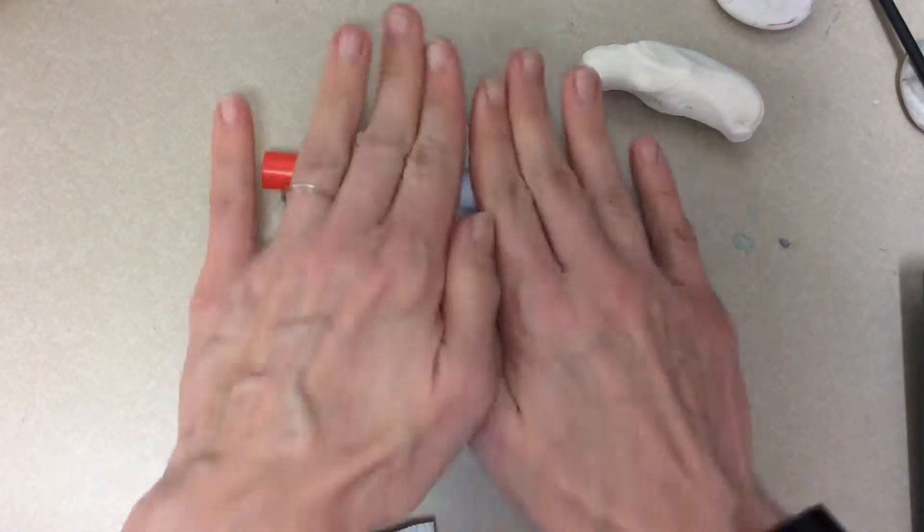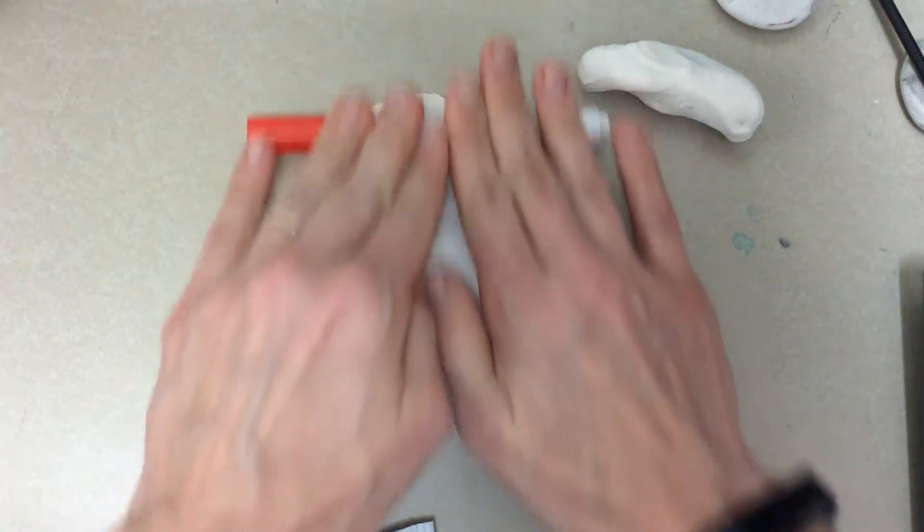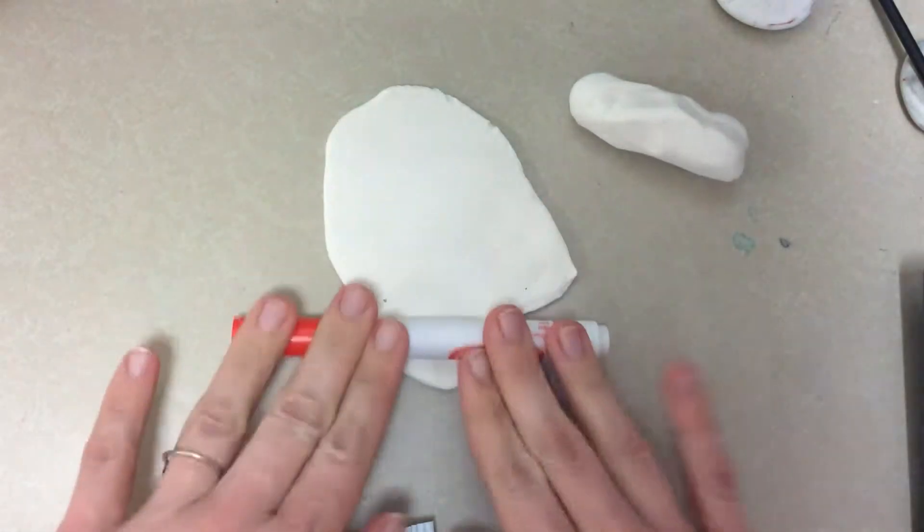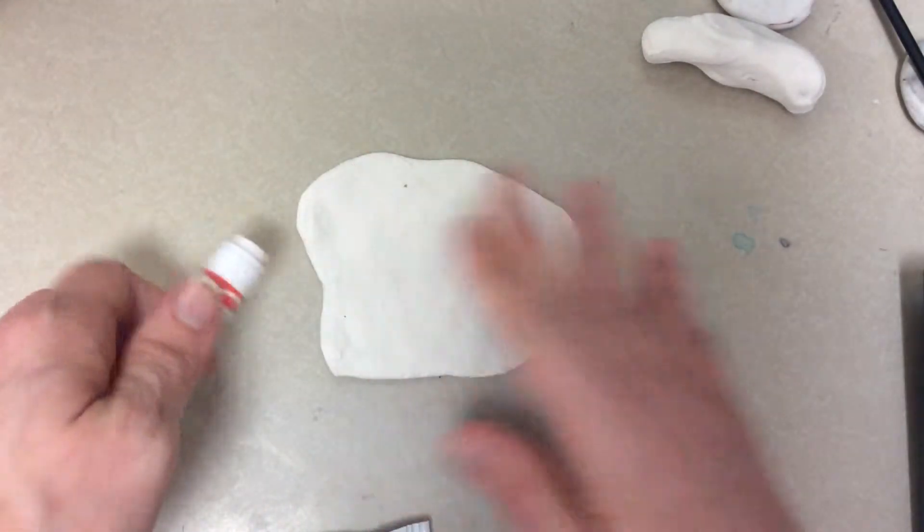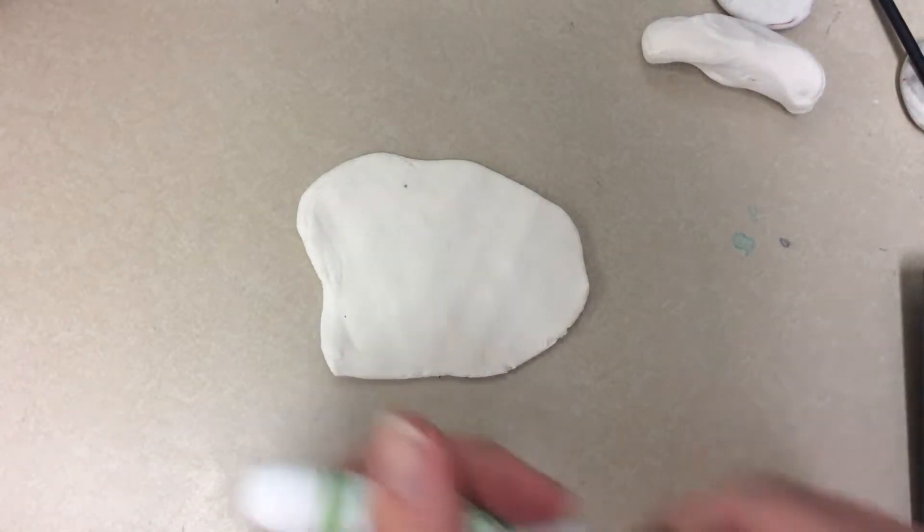You can even use a marker to help roll it out, but don't let it get stuck to the table. So you want to make sure that you pick it up every once in a while. I want my snail's body to be green.